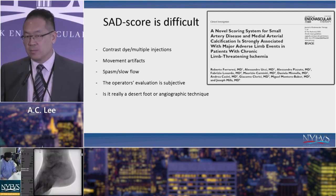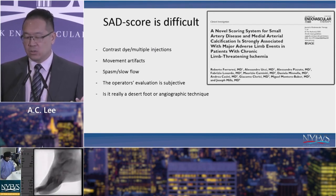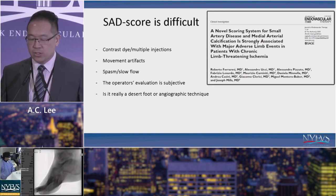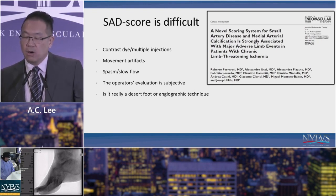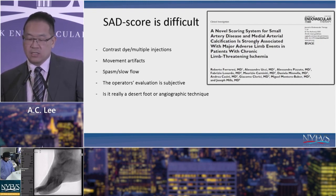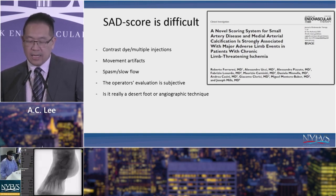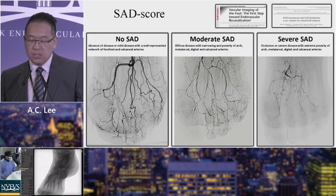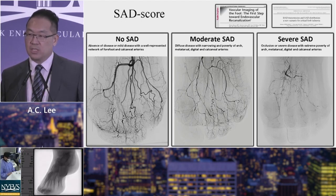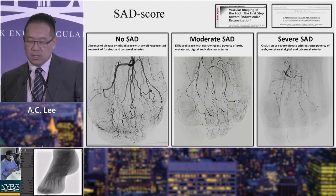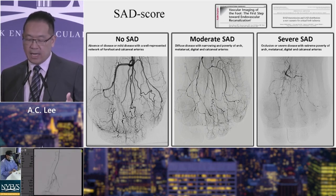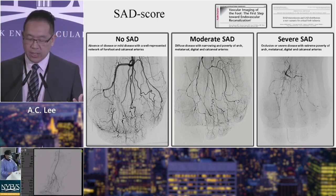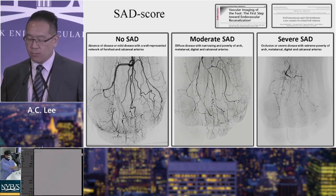There is a novel SAD scoring system — it's pretty simple but also very subjective at times. It's difficult because sometimes you can underfill and vessels look smaller than they really are. Patients have to stay still, you need a good imaging system, there can be spasm, and it depends on where you're injecting from. The question is: is it really a desert foot or just underfilled, hibernating vessels? From Dr. Faracy's article: no SAD, moderate SAD scoring one, and severe SAD scoring two.